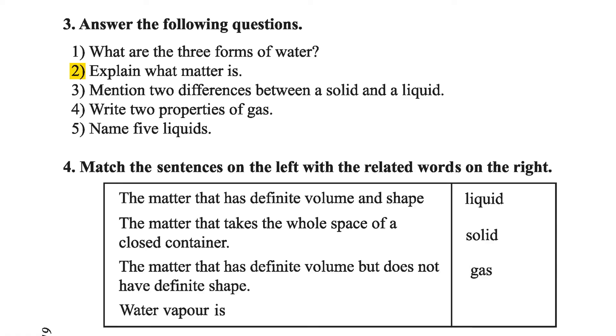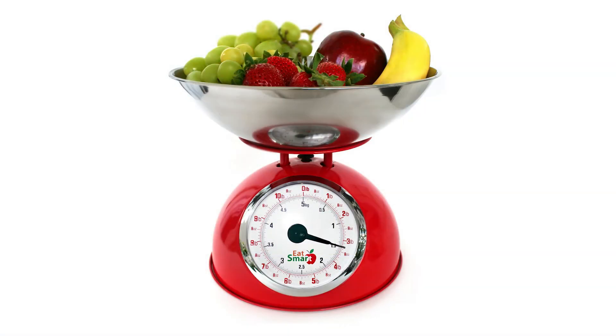Number 2: Explain what matter is. What is matter? Number 1: Matter takes up space — take up means it occupies space. Number 2: Matter has weight. That is what matter is. Now let's go to the next question.